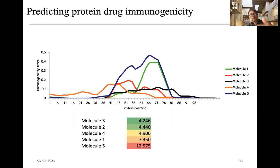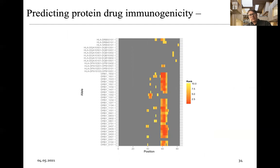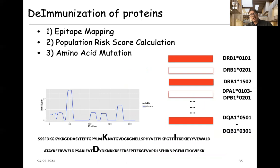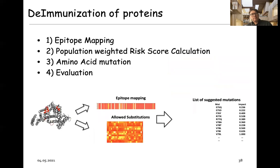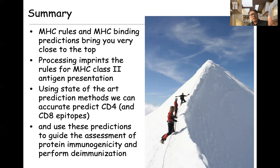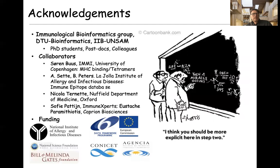Once we have this in place, we can rank proteins based on predicted area under these curves, visualize where hotspot regions are in the protein, and identify which alleles are involved. We can start to de-immunize by mutating positions in those hotspot regions, thereby hopefully lowering the immunogenicity of the protein drug. In summary, MHC class II presentation tools have been improved dramatically, and we can use these prediction algorithms to guide immunogenicity assessments and perform de-immunization. Thank you.